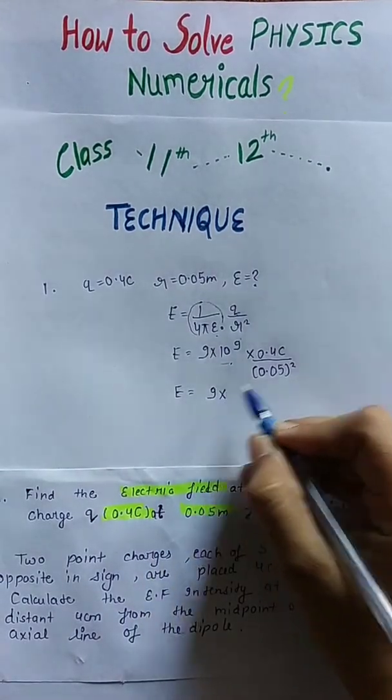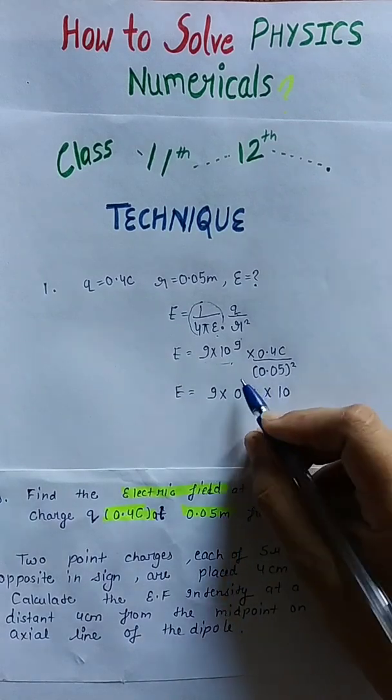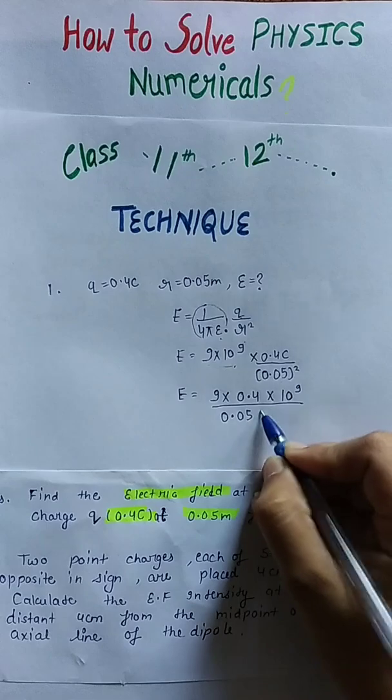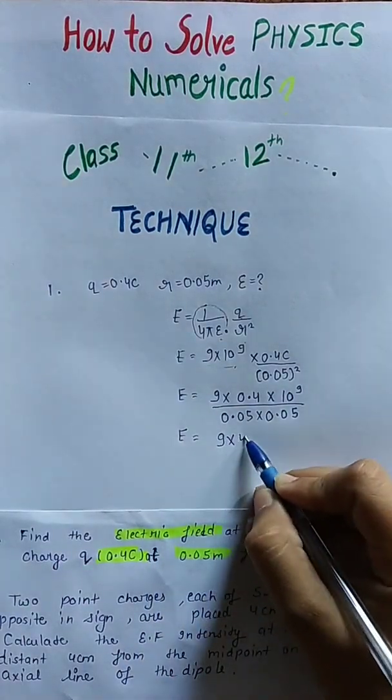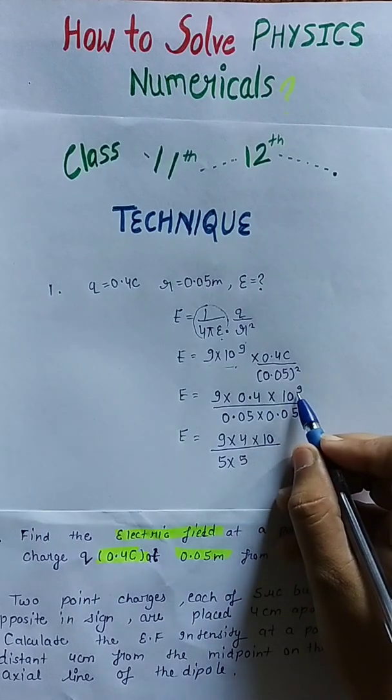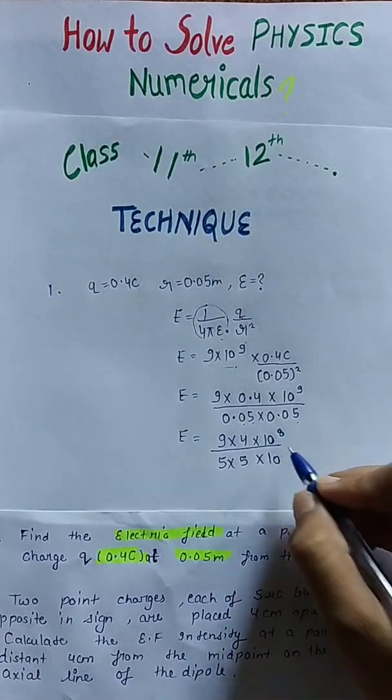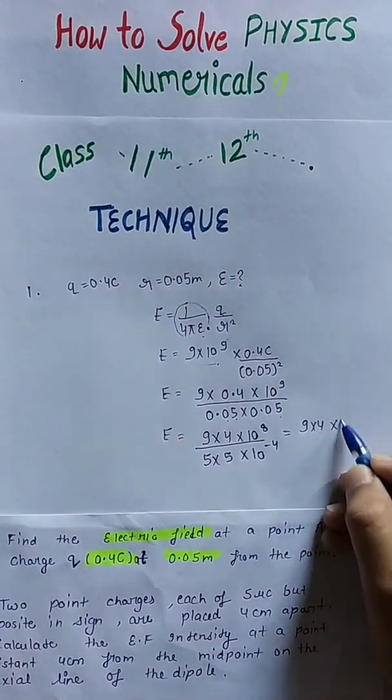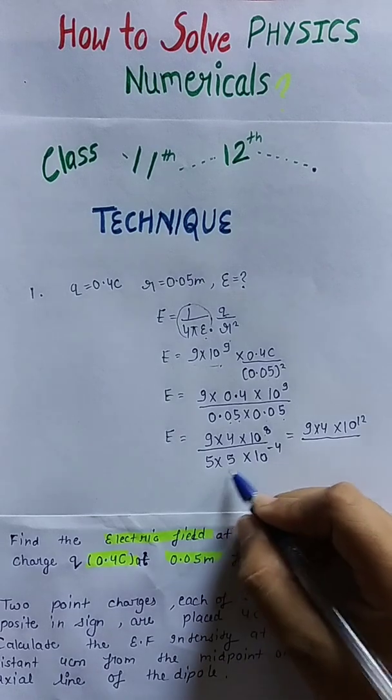Now what I do is separate out the value 9 into 0.4 and the value that is in the power of 10. Keep them aside. This is 0.05 into 0.05, which gives 9 into 4 upon 5 into 5. The powers of 10 subtract: 10 power 9 minus 10 power minus 4 gives 10 power 12 in the numerator. So it can be written as 9 into 4 into 10 power 12 upon 5 into 5, which is 25.